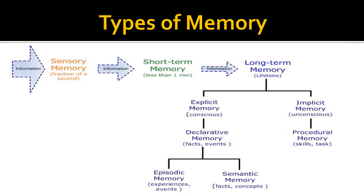This figure shows the different types of memory: sensory memory, short-term memory, and long-term memory, which is further divided into explicit (conscious or declarative) memory and implicit (unconscious or procedural) memory. Explicit memory is further divided into episodic memory, which is memory for experiences and events, and semantic memory, which is memory for facts and concepts.